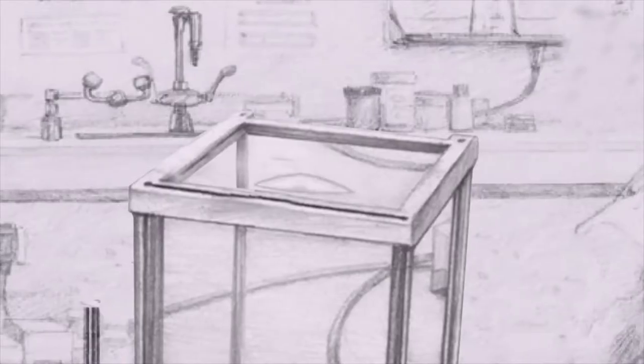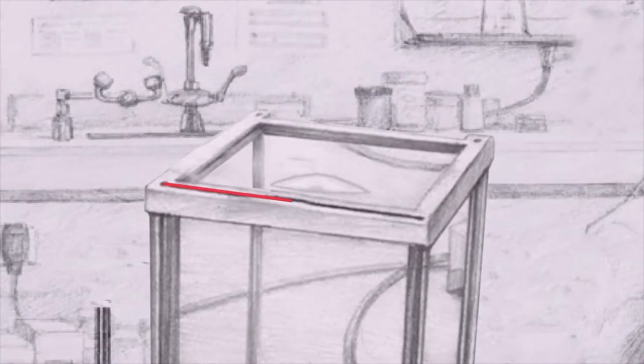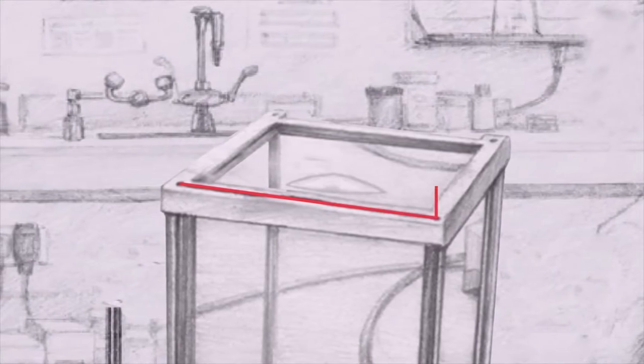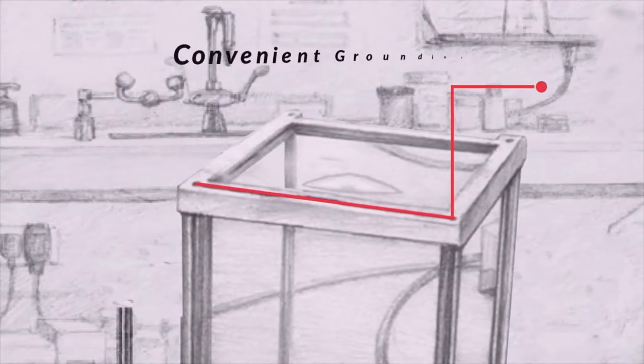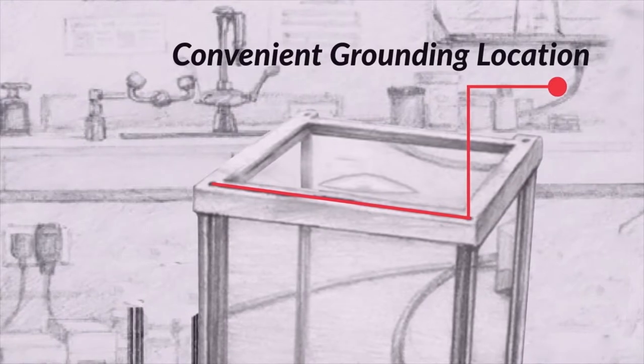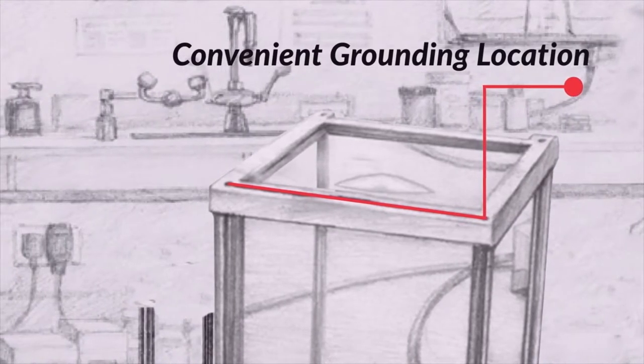A static removal bar along the top of the draft shield provides a convenient grounding location, allowing the user to discharge any static charge that may have accumulated prior to handling samples and weighing.